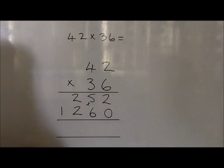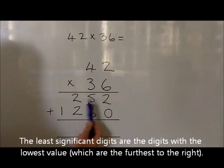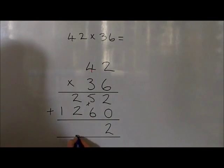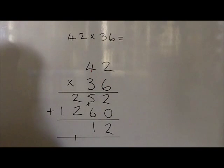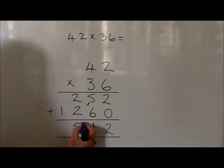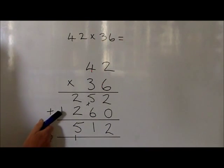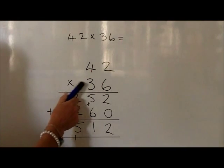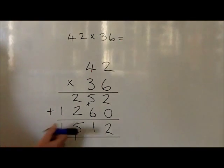We now look to add these two rows together, so we put our add at the side. We add the least significant digits: 2 plus 0 is 2. 50 plus 60 is 110, so we write a 100 carried to the hundreds column and a 1 in the tens column. We now look at 200 plus 200, which is 400, plus the 100 carried is 500 — we write that as a 5 in the hundreds column. And finally, we look at the 1,000 added to nothing, which is 1,000, written as a 1 in the thousands column. Therefore, 42 times 36 is equal to 1,512.